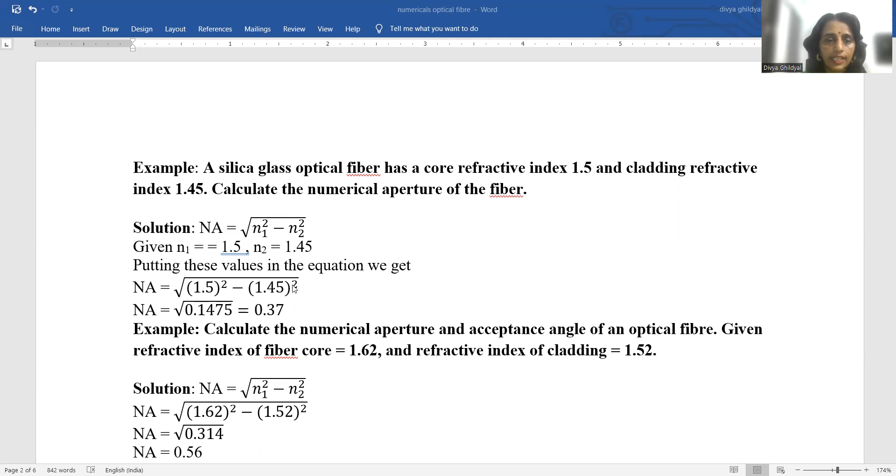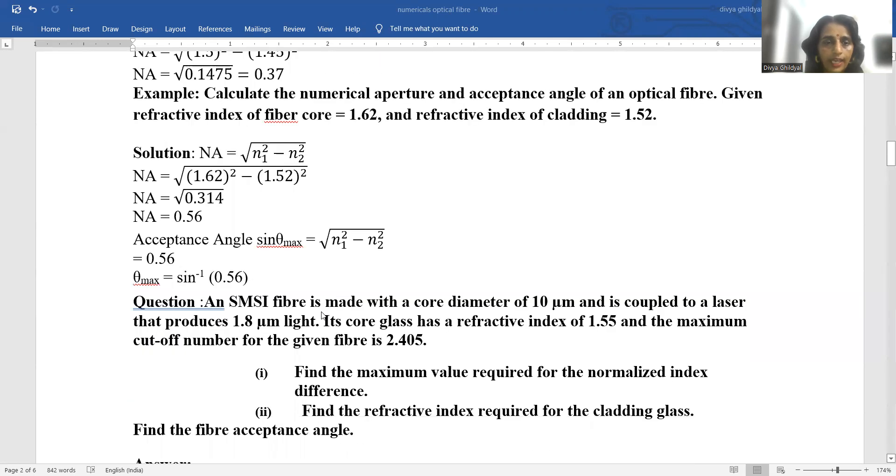Putting these values and taking out square root, you can use a simpler form by using the mathematical expression a square minus b square equals a minus b into a plus b and get the answer. Acceptance angle equals sine inverse of under root n1 square minus n2 square.